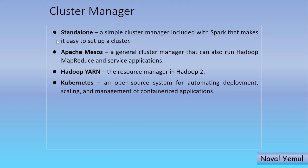There are four types of cluster managers in Spark. First is Standalone — a simple cluster manager built into Spark that makes it easy to set up a cluster. Second is Apache Mesos — a general cluster manager that can also run Hadoop MapReduce. Third is YARN — Hadoop's resource manager, which can be used in Spark as well, though it is somewhat deprecating. Fourth is Kubernetes — used when you want automatic deployment and scaling of jobs.